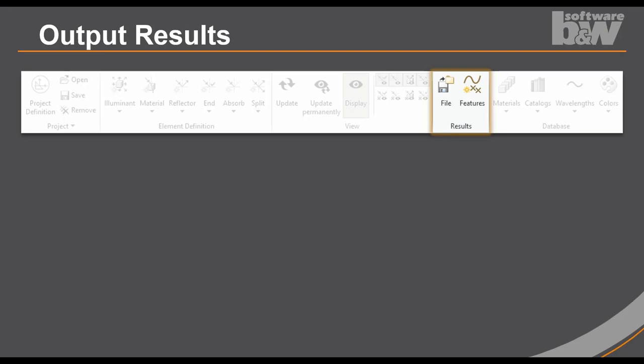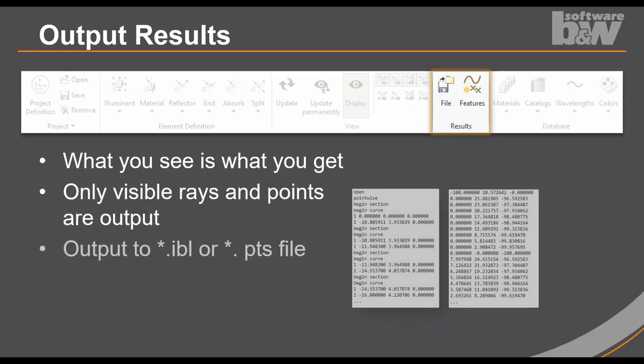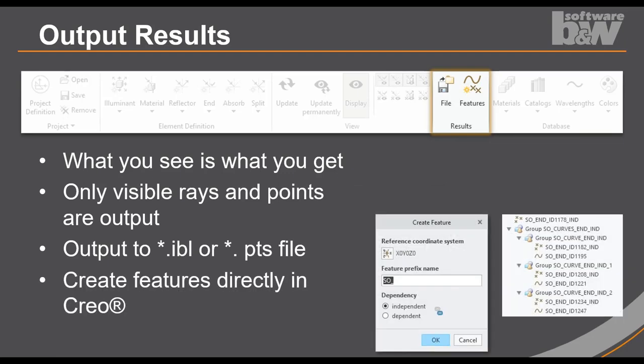The next group is the result group. The motto for this group is what you see is what you get. So all what you can see from smart optics or what you have decided in the view group will be exported. So if only endless rays are selected, then only endless rays are exported. You can output the information to a file. Or you can directly create features in CREO.